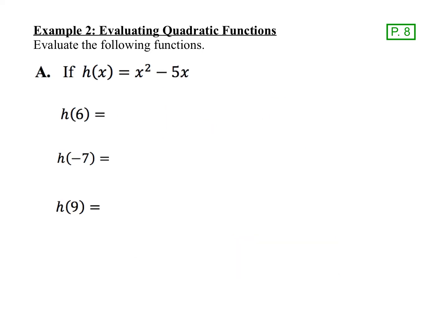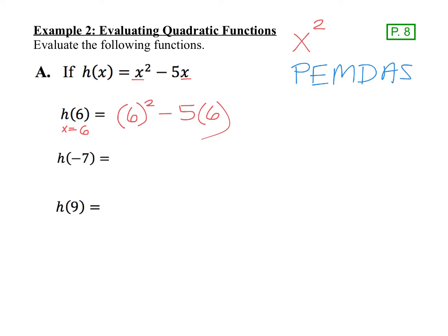Now let's move to evaluating quadratic functions. What makes an equation a quadratic function is that it has an x² in it. When we evaluate h(6), we replace the x values with 6 — there are two x values, so both get replaced with 6, and we always put parentheses around the substituted value. Remember order of operations: start with the exponent, then multiplication and division, then addition or subtraction. 6² is 36, then 5 times 6 is 30, so 36 minus 30 gives an answer of 6.